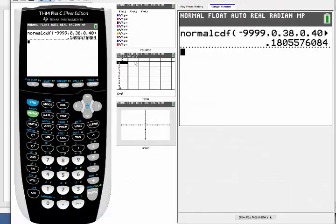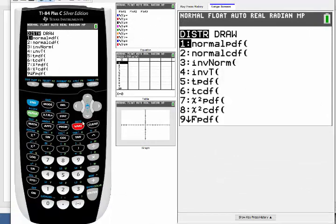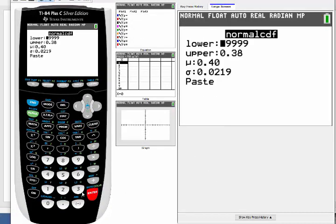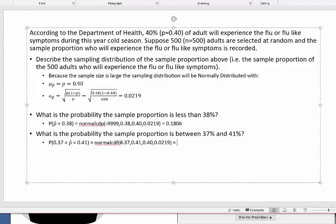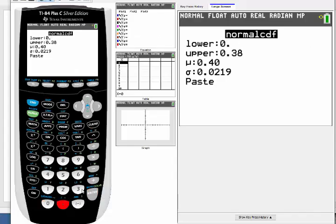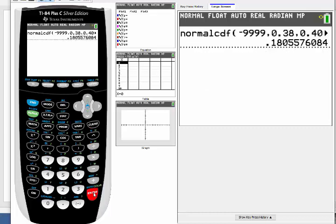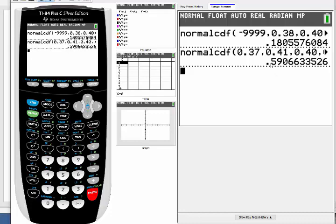So let me go back to my graphing calculator. I'm going to go second function distribution, normal CDF. My lower here was 0.37, my upper here is 0.41. The mean and standard error don't change here. So it looks like it should be 0.5907 when I round it.